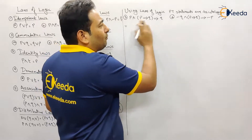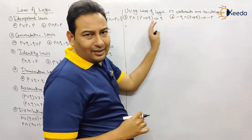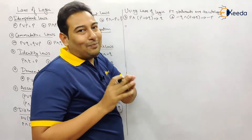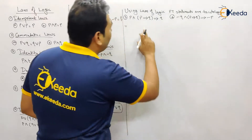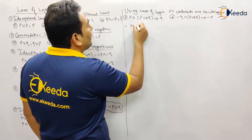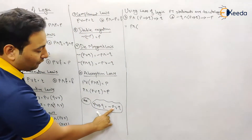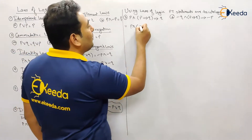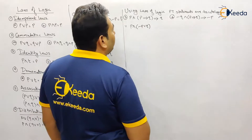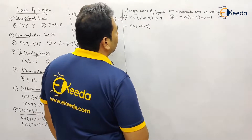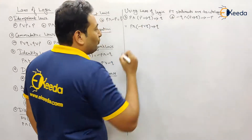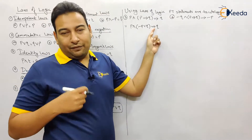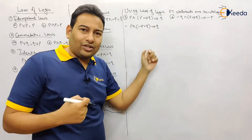If you observe, both problems are similar, so I'll solve problem three for you and recommend you try problem four by yourself. First, let's replace the implication: p implies q becomes negation of the first term or second term. So this will be negation of p or q, implies q. Now this is the next implication we need to solve — the same logic applies.